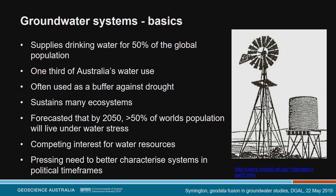The aim of this slide is to convey just why it's so important that we understand these systems. Groundwater makes up 50% of the global population's drinking water. Within Australia it makes up one third of the water we use, and it's particularly important in drier communities like Perth and rural areas. Groundwater also sustains lots of ecosystems — vegetation and animal communities heavily reliant on groundwater at or near the surface. Quite disturbingly, it's forecast that by 2050 more than 50% of the world's population will live under some kind of water stress, largely due to depletion of major aquifers through unsustainable use.